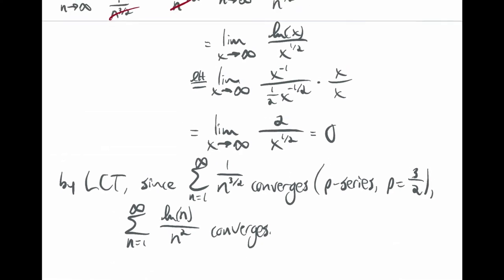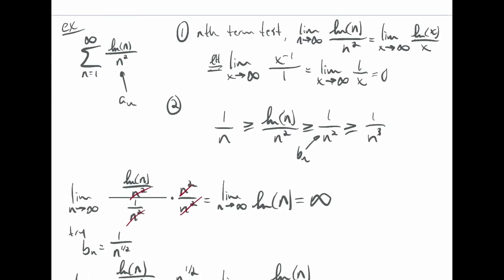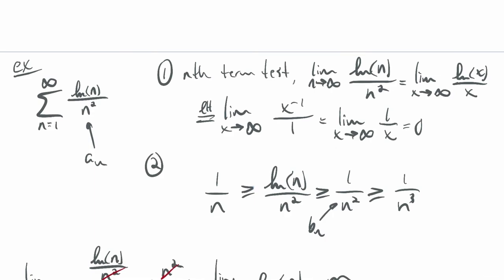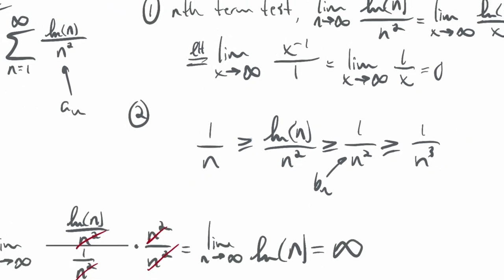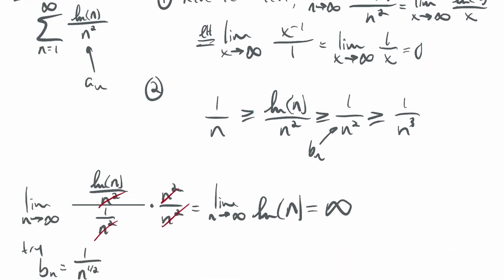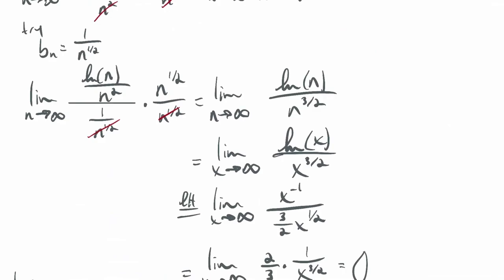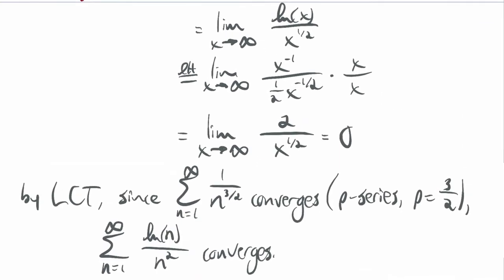That one had some missteps — I tried a few things, it didn't work, and that's okay. That's how it's going to be sometimes. It's not always straightforward. We ended up using something that's not directly obvious, so we had to do a little bit of guesswork. We did the nth term test first, thought about direct comparison — that didn't work — tried limit comparison, didn't work, tried a different limit comparison, didn't work, tried another, and finally got the result.